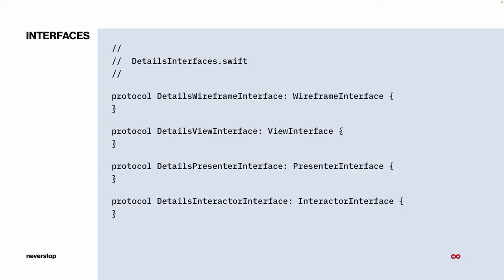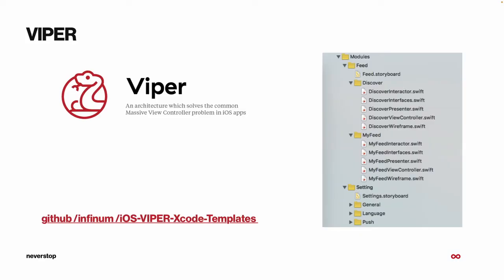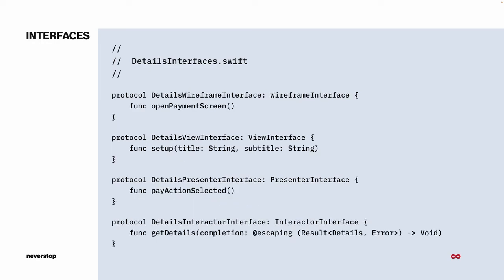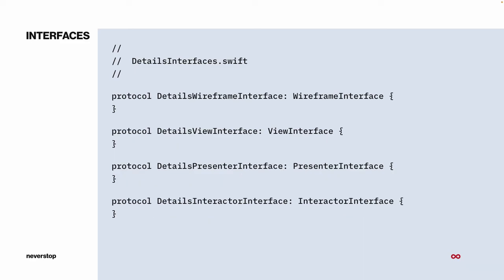The generator also produces an interfaces file — not part of the acronym, but it defines the functionality of all components in one place so you can see how they work with one another. The interfaces file lets you quickly see what each component can do. For example, the View calls a function when the pay button is pressed, the Interactor has a get-details function that the Presenter calls, and so on. This layout is also very reminiscent of Objective-C header files, which is familiar to many of us.